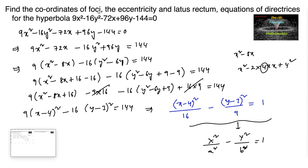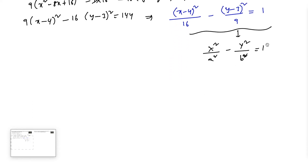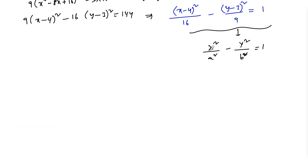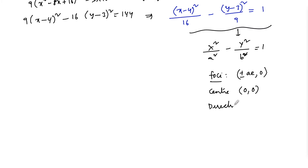We require foci, eccentricity, latus rectum, and equations of directrices. For the standard form x²/a² - y²/b² = 1, the foci are at (±ae, 0), center is (0, 0), directrices are x = ±a/e, and latus rectum is 2b²/a. Let us find the eccentricity first.